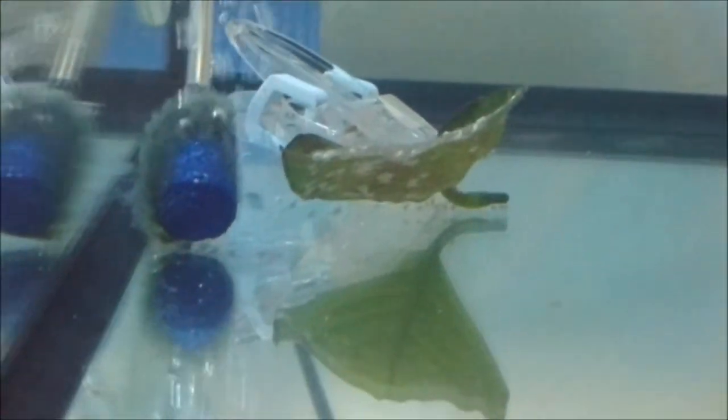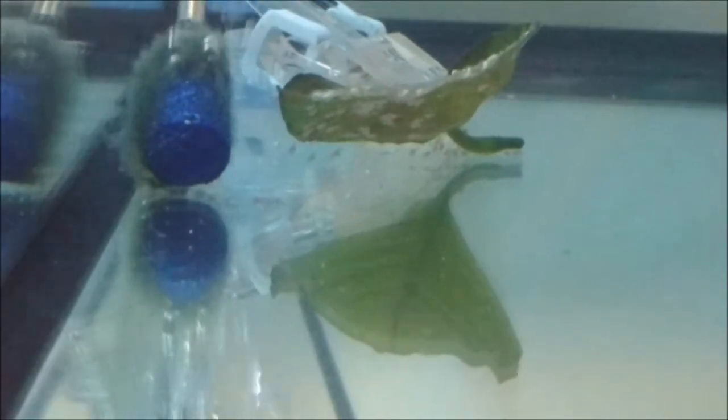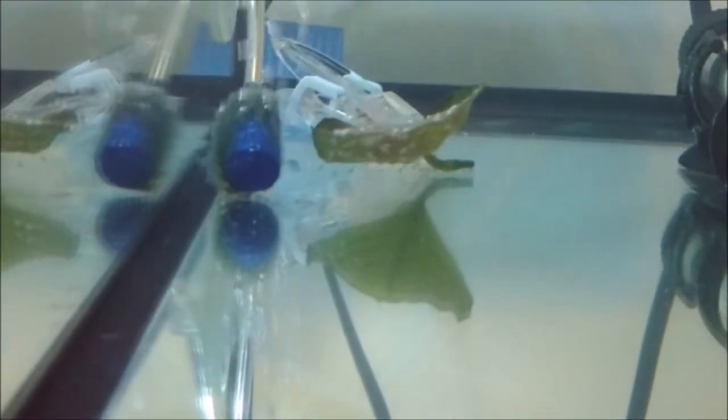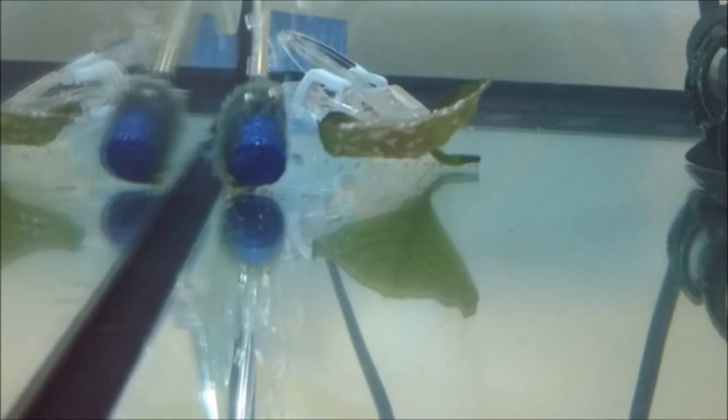And it took approximately 4-5 days for the eggs to go into the wiggler stage. As you can kind of see there, you can kind of see a lot of little wiggling there, hence the wiggling stage. But they were in this stage for about another 6 days or so.